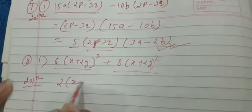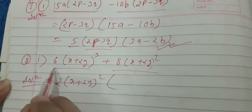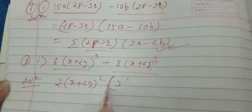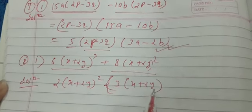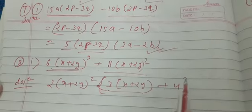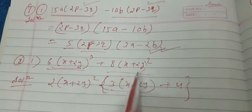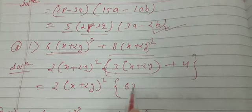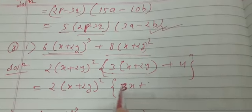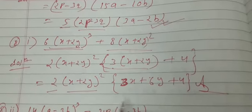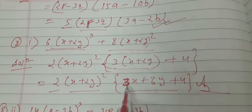So the first common factor is 2 and the second is (x plus 2y)². After taking these out, what remains inside the bracket is: from the first term, 3 into (x plus 2y), and from the second term, just 4. Expanding inside: 3x plus 6y plus 4. So the three factors are: 2, (x plus 2y)², and (3x plus 6y plus 4). This is the answer to question 8(i).